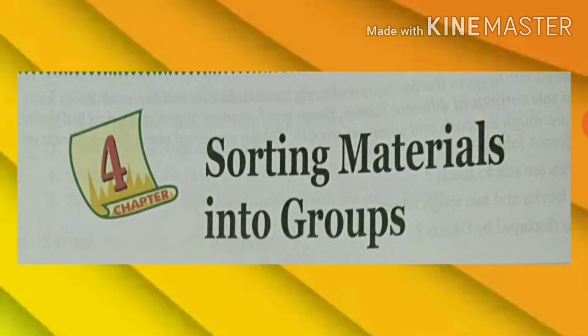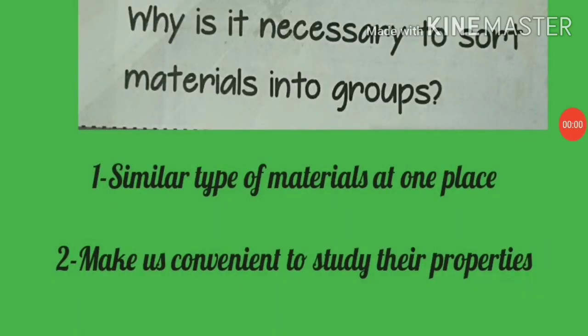In this chapter we are going to read about the characteristics of different objects on the basis of which we classify them. Now, why is it necessary to sort materials into groups? We will get all similar types of material at one place, and it makes it convenient to study their properties. In this way we can better know about the different types of objects around us, and we can easily find things. The process of sorting and grouping objects according to some basis is called classification.